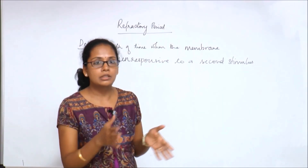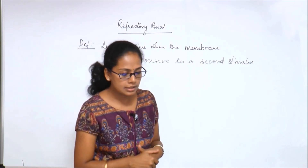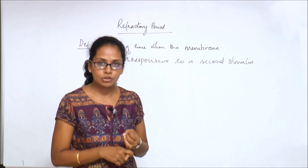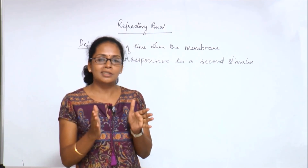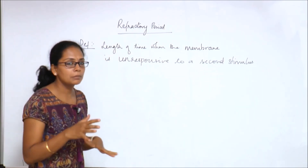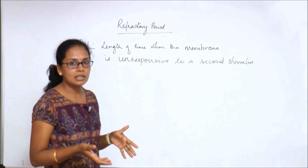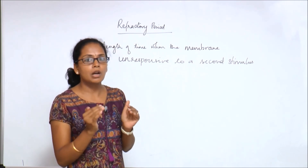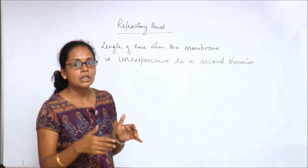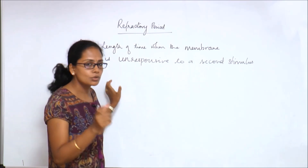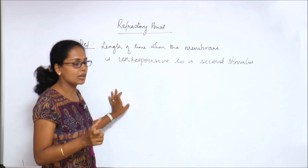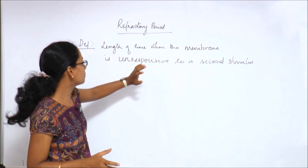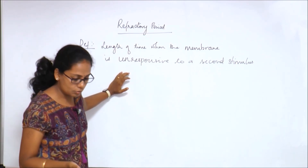Another important concept to understand along with action potential is the refractory period. Every time a single stimulus is applied, you get a single action potential. There is a length of time when the membrane is not responsive to a second stimulus. Even if a second stimulus is given, there is no response. The refractory period is defined as the length of time where the membrane is unresponsive to a second stimulus.